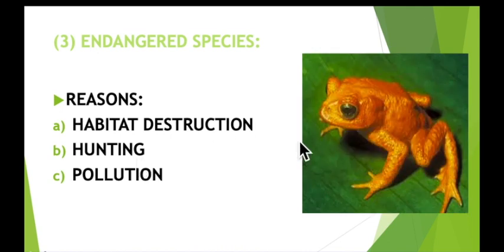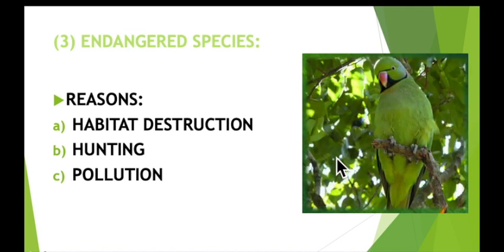Golden toads were also destroyed because of habitat destruction. The Mauritian green parakeet, also known as the echo parakeet, was said to be the most endangered bird species in the world — only about 10 birds were known to exist. These parakeets live in forest habitats.